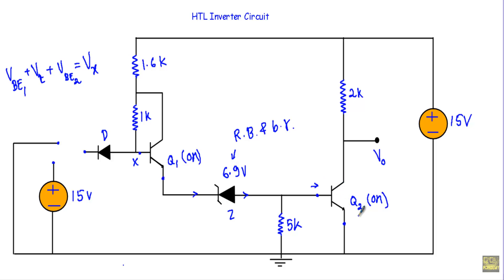To turn on transistor Q2, I first have to apply a voltage greater than 0.7 volt between its base and emitter, which I denote VBE2. If Q2 is in the on state, I need base current, so the Zener diode must be in the on state. The Zener current is supplied by the emitter terminal of transistor Q1, which conducts only when it is in the on state — requiring VBE1 greater than 0.7 volt. Therefore the voltage Vx must be applied at this terminal to turn on Q2.